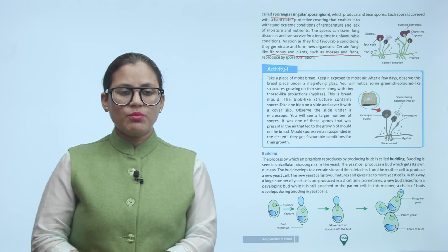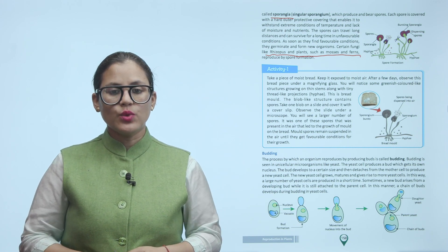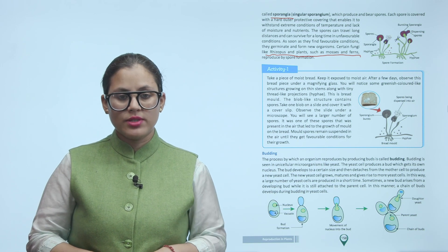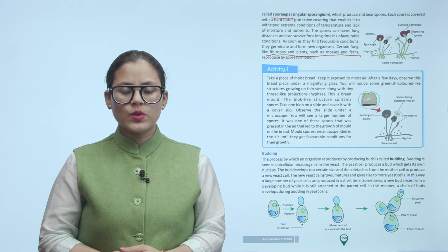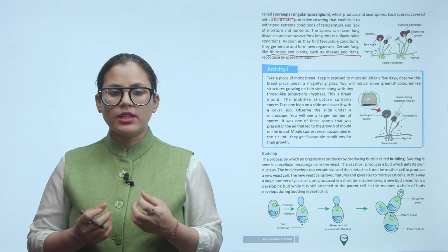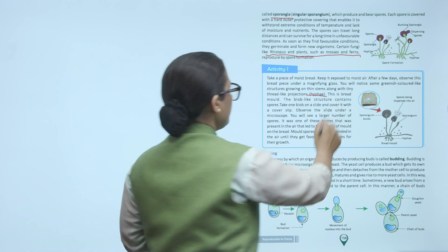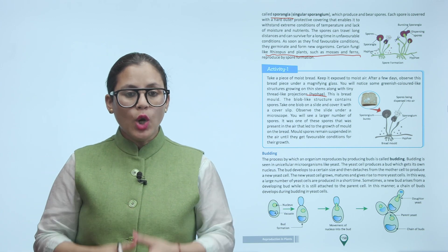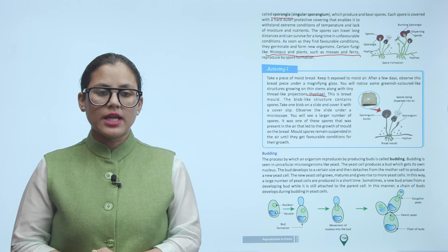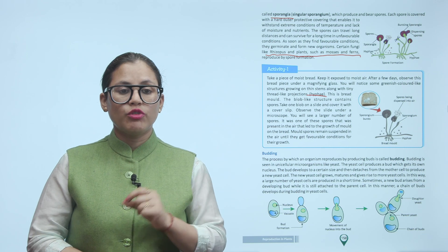Activity 1: Take a piece of moist bread and keep it exposed to moisture. After a few days, observe the bread piece under a magnifying glass. You will notice some greenish-colored blob-like structures growing on thin stems along with tiny thread-like projections called hyphae. This is bread mold. The blob-like structure contains spores. Take one blob on a slide and cover it with a cover slip. Observe under a microscope — you will see a large number of spores. One of these spores present in the air led to the growth of mold on the bread.